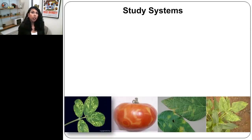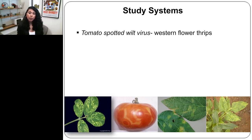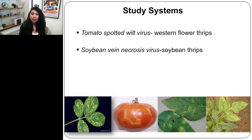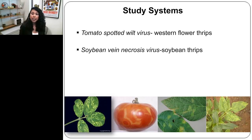Each plant virus–vector system is unique, and I study two systems. One is tomato spotted wilt virus in western flower thrips, which I studied during my postdoctoral research at Kansas State University. Currently, I study soybean vein necrosis virus and soybean thrips interaction. What's common to both is that these viruses belong to the genus Tospovirus, and the insect vectors, as the name denotes, are thrips. Interestingly, there is no singular 'thrip' — both singular and plural is 'thrips.'